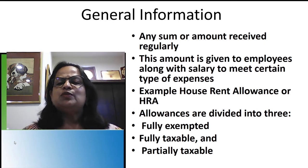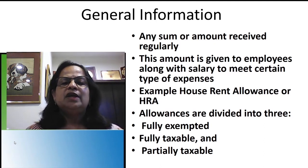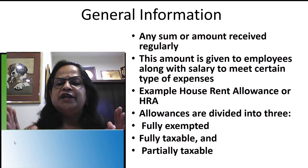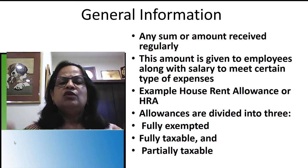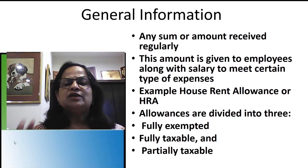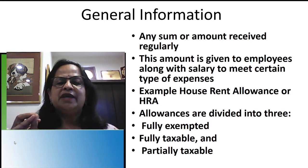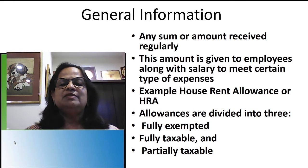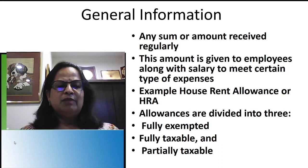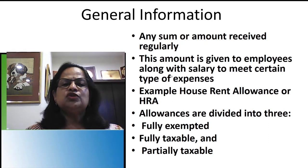Allowances are divided into three categories: fully exempted, fully taxable, and partially taxable. These topics are important for exam questions — you may be asked to list six or eight fully exempted items, fully taxable items, or partially taxable allowances. This is very important both for theory questions and for solving salary computation problems.